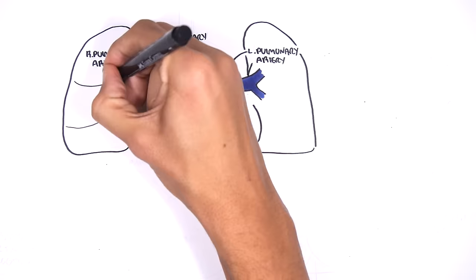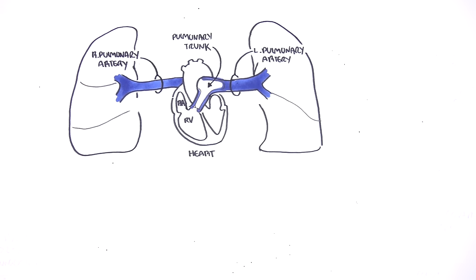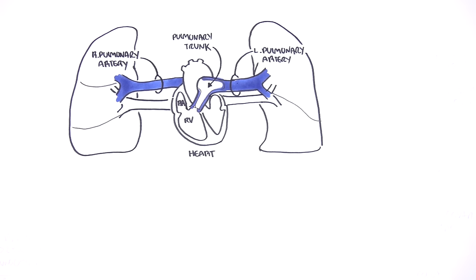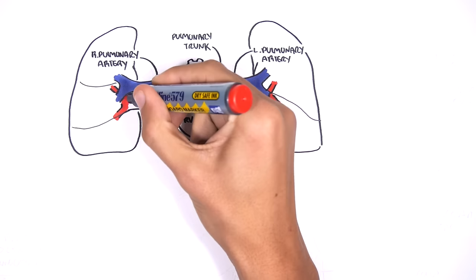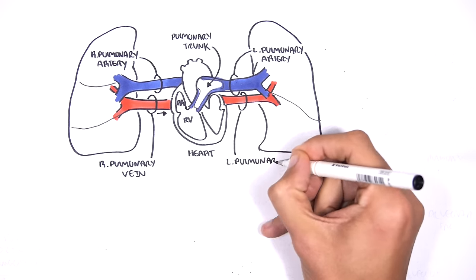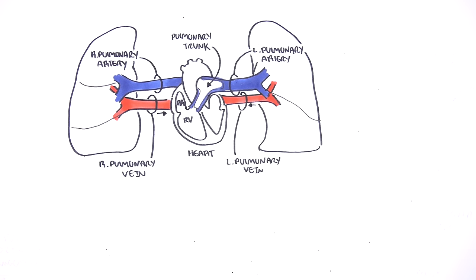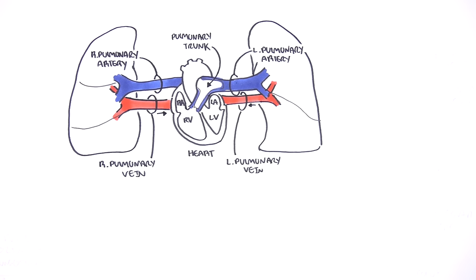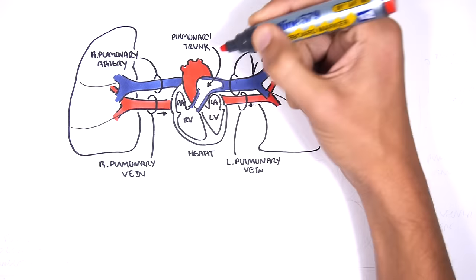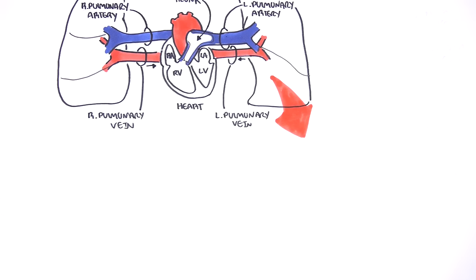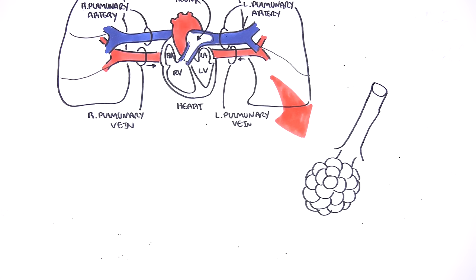The lungs will re-oxygenate the blood. This newly oxygenated blood will then return back to the heart via the left and right pulmonary veins. The pulmonary veins will return the oxygenated blood to the left atrium. The blood from the left atrium will then join with the left ventricle before being pumped around the body. Let us now look at the lungs and see the structures responsible for re-oxygenating the blood in a little bit more detail.